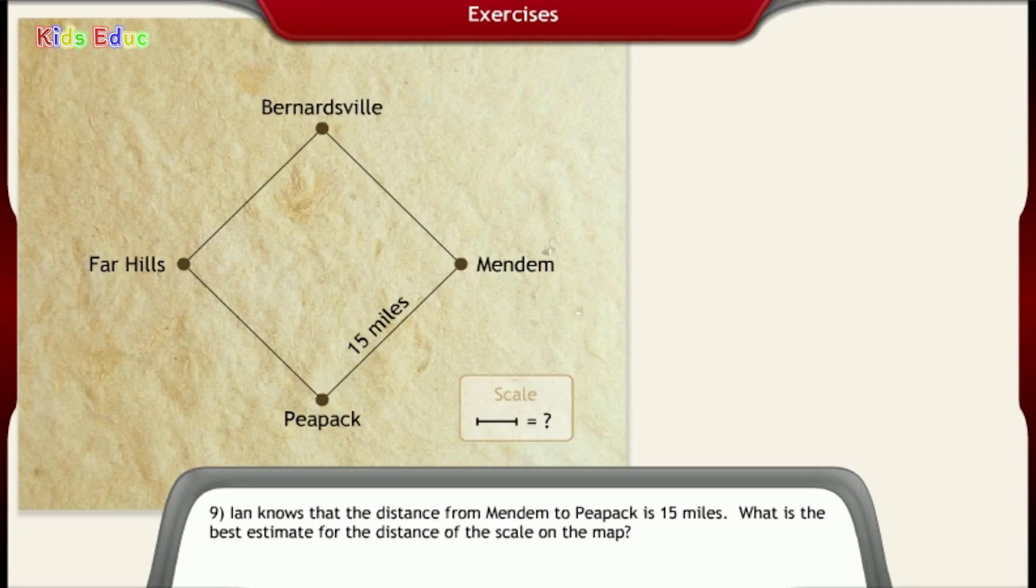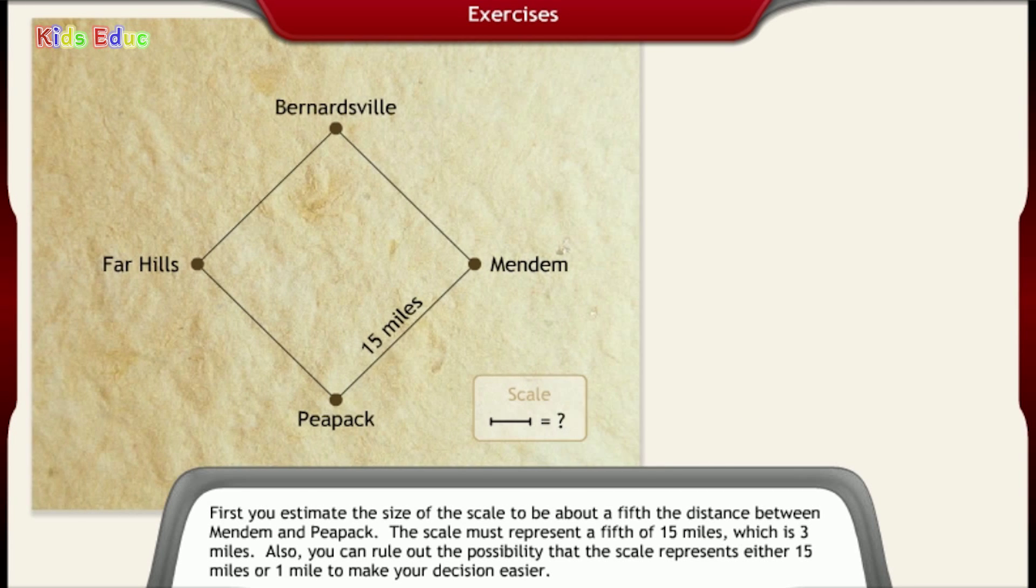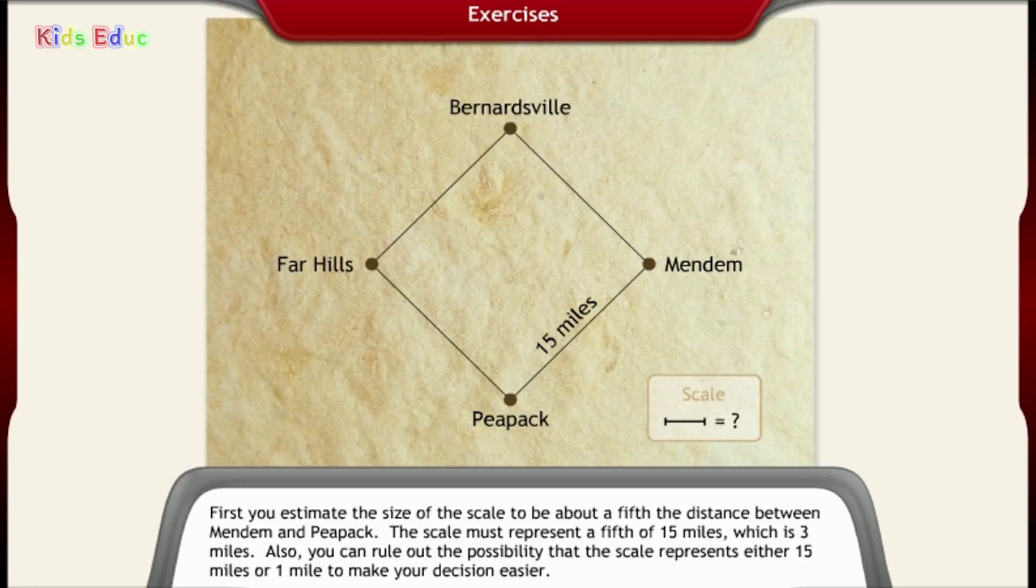Number 9. Ian knows that the distance from Mendem to Peapack is 15 miles. What is the best estimate for the distance of the scale on the map? 15 miles, 5 miles, 3 miles, 1 mile. 3 miles. That's it. First, you estimate the size of the scale to be about a fifth the distance between Mendem and Peapack. The scale must represent a fifth of 15 miles, which is 3 miles. Also, you can rule out the possibility that the scale represents either 15 miles or 1 mile to make your decision easier.